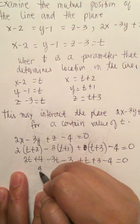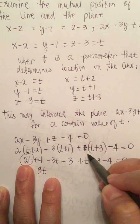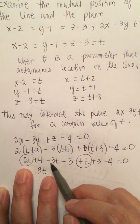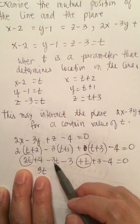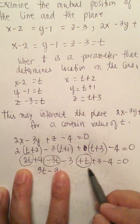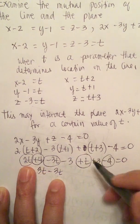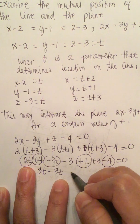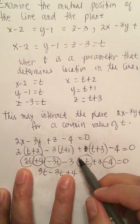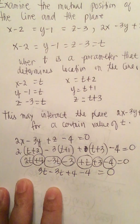And then we combine like terms. We get 2t plus 2t plus t is 3t, and then we get 4 and minus 4, so plus 4 and minus 4, and 3 and minus 3. So this is indeed equal to 0.